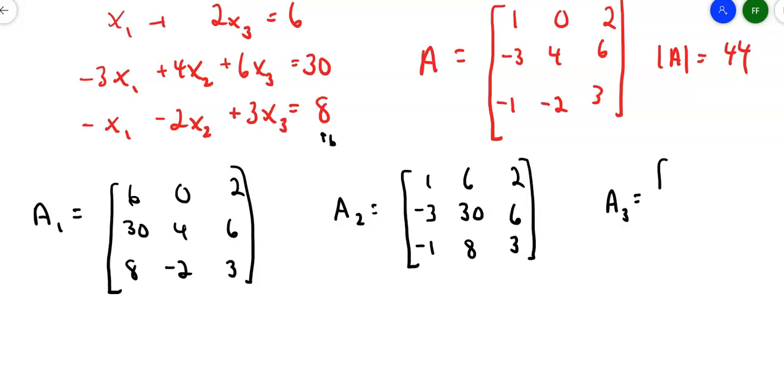The third matrix keeps the first column, so 1, negative 3, negative 1. Keeps the second column, 0, 4, negative 2. Now the third column becomes 6, 30, and 8. So now I've got my three matrices.